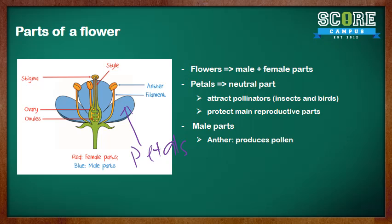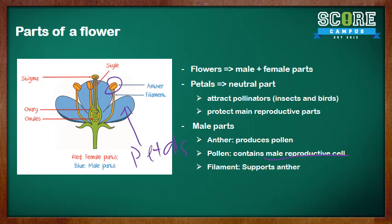The male parts include the anther, which produces pollen containing the male reproductive cell. We also have the filament, which supports the anther.